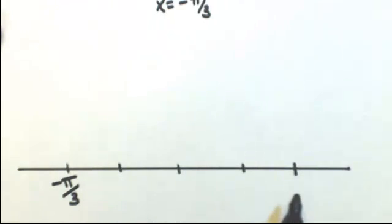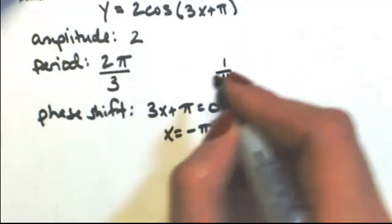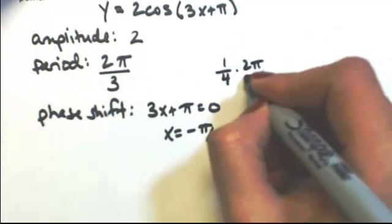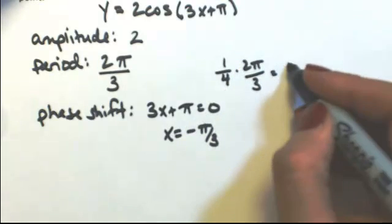To find what these next coordinates are going to be, I need to add a quarter of the period each time. So to find what I need to add, I'm going to take a quarter of the period. So a quarter of the 2 pi over 3. 2 goes into 4 twice, so this would be pi over 6.